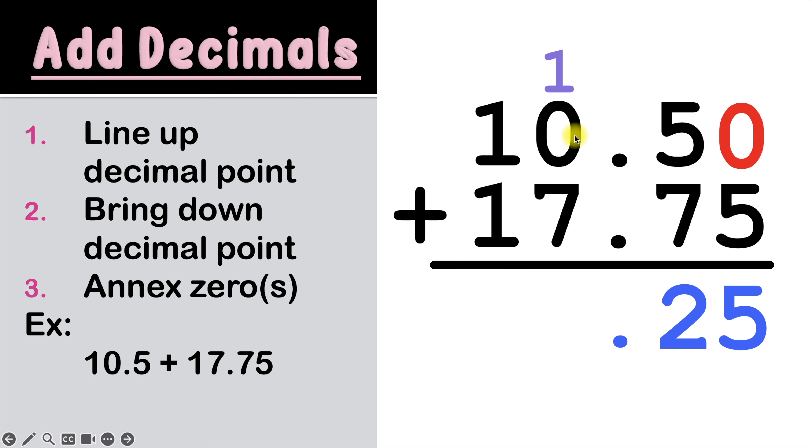One plus zero is one. And one plus seven is eight. And finally, one plus one is two. Making our final answer 28.25 properly read as 28 and 25 hundredths.